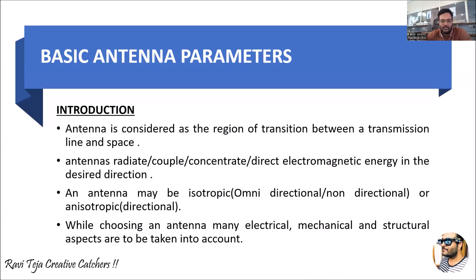Hello everyone, welcome to the course of Antennas and Propagation. In today's class we are going to learn about an introduction to basic antenna parameters. First we need to know what an antenna is. Technically, an antenna is considered as the region of transition between a transmission line and a space. Whatever the antenna is made up of is considered as the transmission line where electromagnetic waves pass through it, and once that wave is released into free space — the wireless medium.